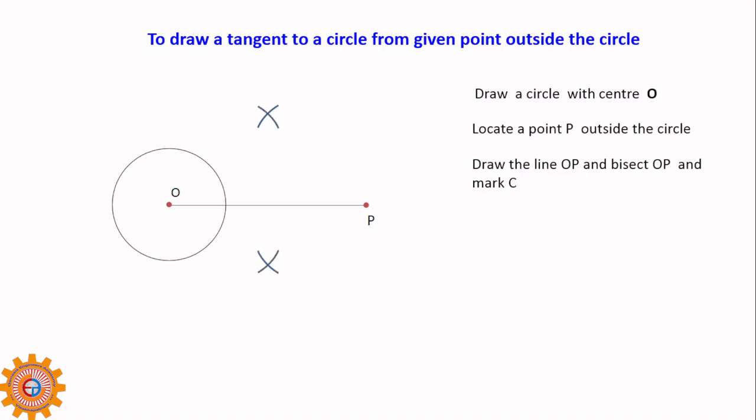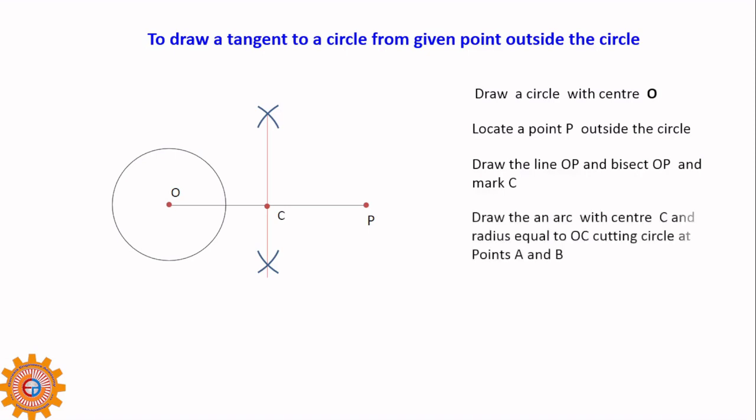That midpoint we call C. To bisect, you have to draw two arcs from O and P. This will give us C, the midpoint of OP. Then draw an arc with center C and radius equal to OC or CP.